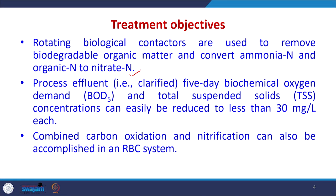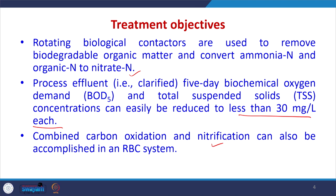Rotating biological contactors have treatment objectives. They are used to remove biodegradable organic matter and convert ammoniacal nitrogen and organic nitrogen to nitrate nitrogen. The process effluent — clarified 5-day BOD and total suspended solids concentration — can easily be reduced to less than 30 milligram per liter each using RBRs. Combined carbon oxidation and nitrification can also be accomplished in the RBC system.